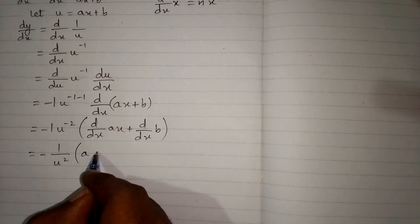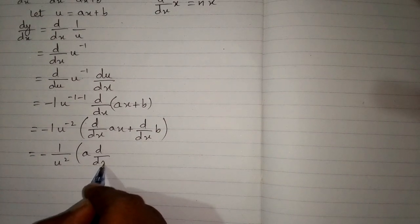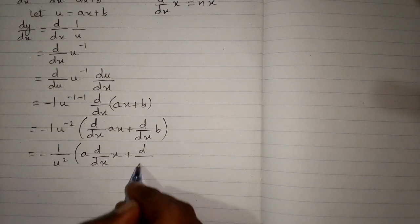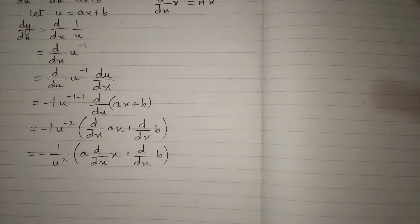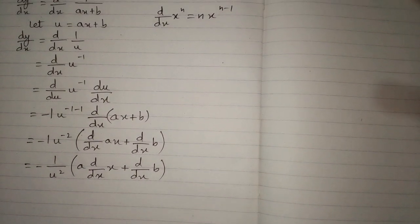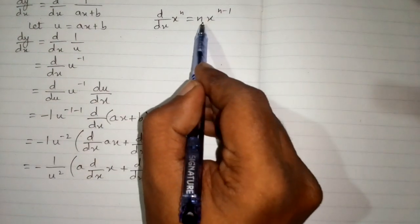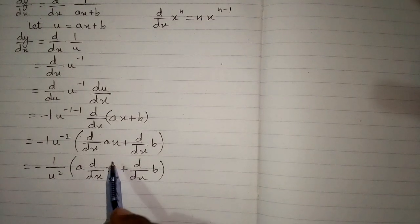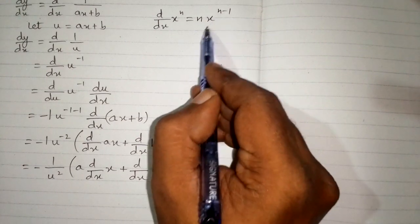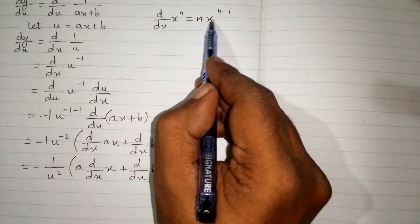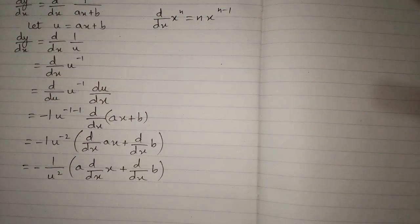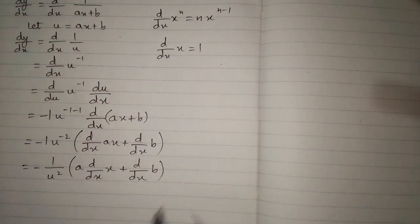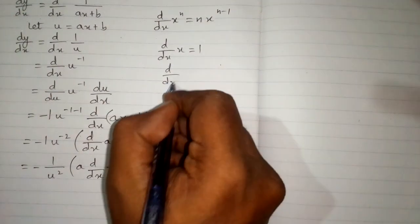The derivative of ax can be written as a times the derivative of x. We apply the power rule: d/dx of x to the power n equals n times x to the power n minus 1. Here we have x to the power 1, so x to the power 1 minus 1 is x to the power 0, which equals 1. So the derivative of x is 1, and the derivative of any constant is 0.